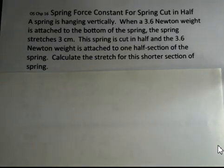So this vertical spring, we put a 3.6 Newton weight attached to the bottom and observe that the spring stretches by 3 centimeters. We then cut this spring in half, and the 3.6 Newton weight is again attached to a spring, but this time just half the length of the first example. We want to calculate how far the spring stretches for this shorter spring.